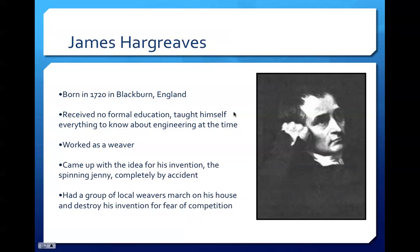Our first main inventor of the Industrial Revolution was James Hargreaves, who was born in 1720 in Blackburn, England. James was a bright individual who never had the opportunity to receive a formal education, but taught himself everything he could about the engineering world. As Hargreaves grew up, he took occupation as a weaver to provide for his family, which led him to create his invention, the Spinning Jenny. The story goes that his daughter Jenny accidentally bumped over his loom while he was at work. As the knocked-over spindle continued to revolve, Hargreaves came up with the idea that an entire line of spindles could be worked off of one wheel. Thus, in 1764, Hargreaves formally created the first Spinning Jenny. Fearful of cheap competition, local spinners actually marched upon his house to destroy his machine, causing Hargreaves to delay patenting the Spinning Jenny until 1770.